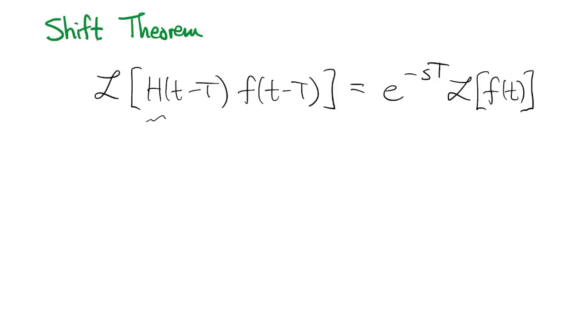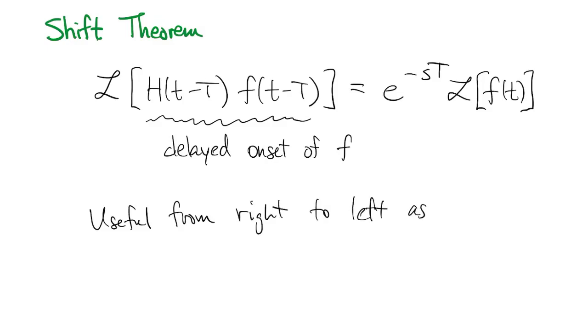This thing that we're taking the transform of on the left is just a delayed onset of the function f. We'll use this formula in various ways. We use it when we're going from left to right in this equation. But it's also useful for when we have something on the right and we want to go back to the thing on the left.